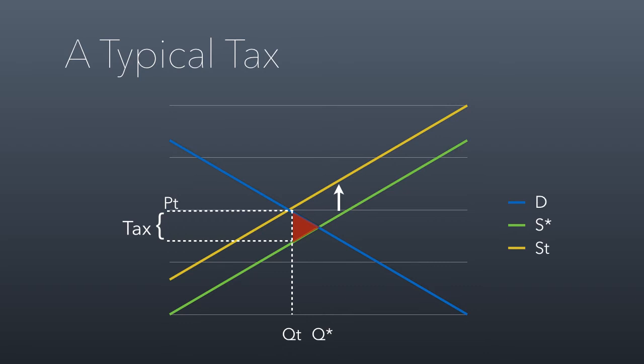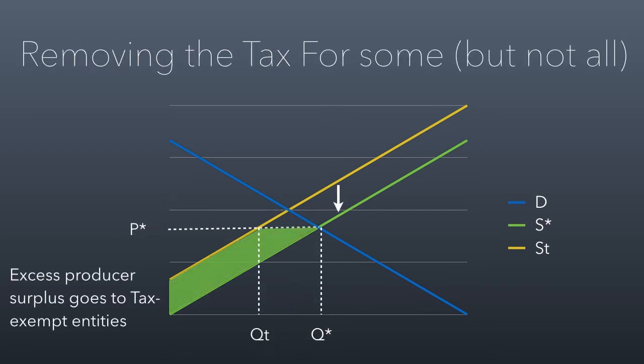So this is what happens when you impose a tax on an industry like health care or education. Now here's the question: what happens if you remove the tax for some people but not all people? So some of the producers are now tax-free but other producers are not. You now have two supply curves. You have the yellow one — the supply curve for producers that still have to pay a tax — and the green one, which is the supply curve for the producers that are now tax-exempt. What that does is it drives the price back down to where the original price line was and the original quantity, because the nonprofit organizations that are tax-exempt can make up for the previous problems.